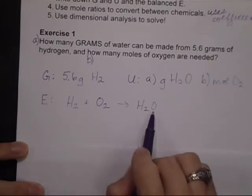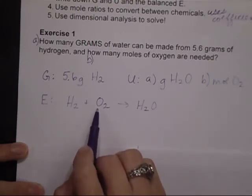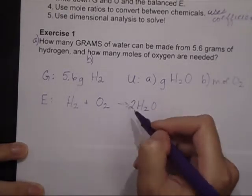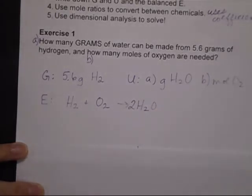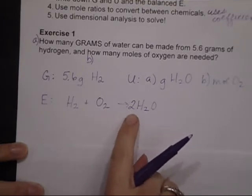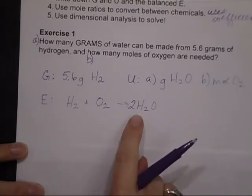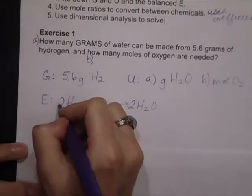Right off the bat, I can see I only have one O here, but I have two here, so I need to change the coefficient, put a 2 in front. Now I have two O's and two O's, but now I have four hydrogens, so I have to put a 2 over here also.